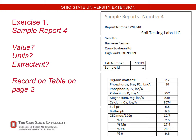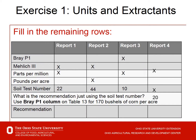Let's look at the final report, number 4. We have a phosphorus value reported as 20. The units being reported are pounds per acre, and the extractant is a Bray P1 test. So we fill in the table for report 4: Bray P1, pounds per acre, value of 20.